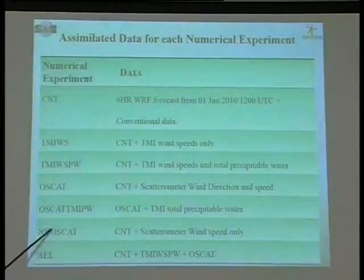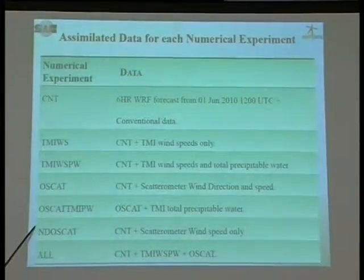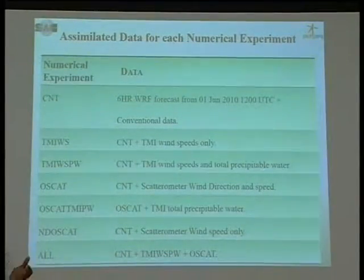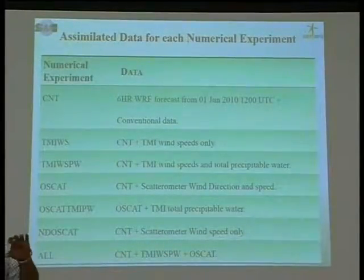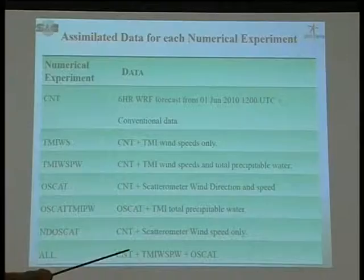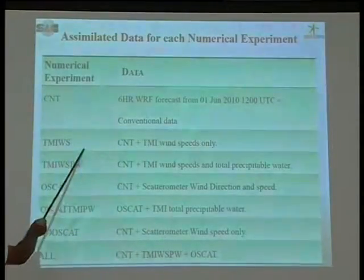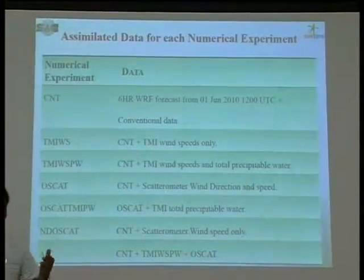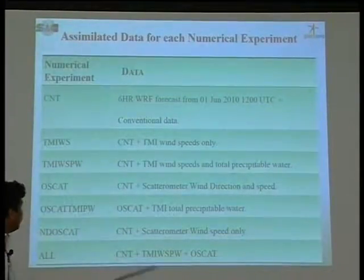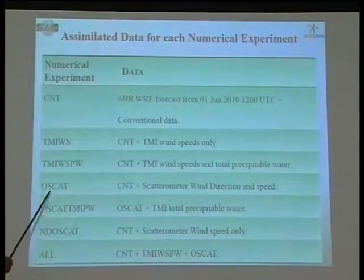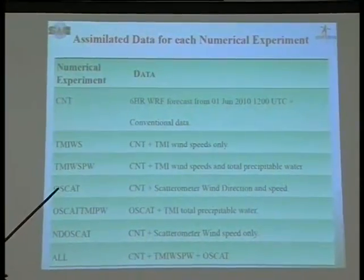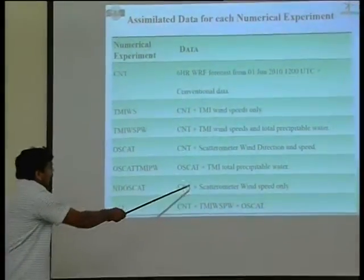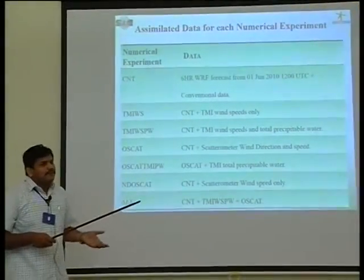One of the experiments uses only scatterometer wind speed, without wind direction, making it slightly similar to TMI wind speed. I want to check how much additional impact is obtained in scatterometer wind assimilation when wind direction is added along with wind speed.